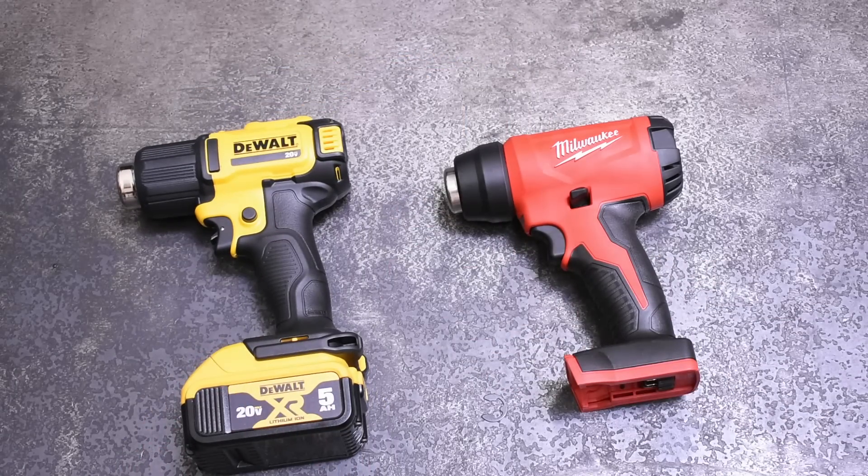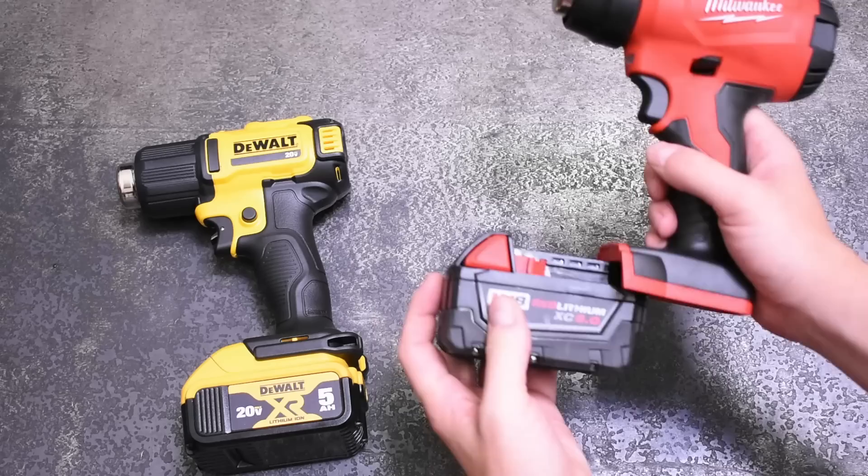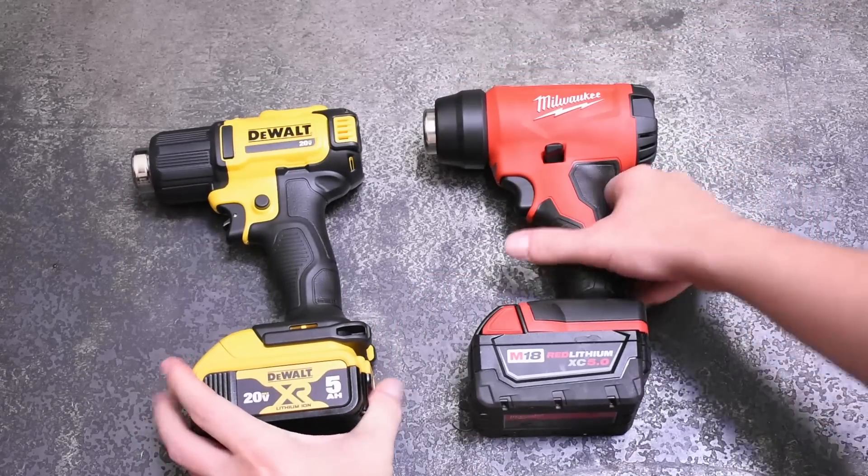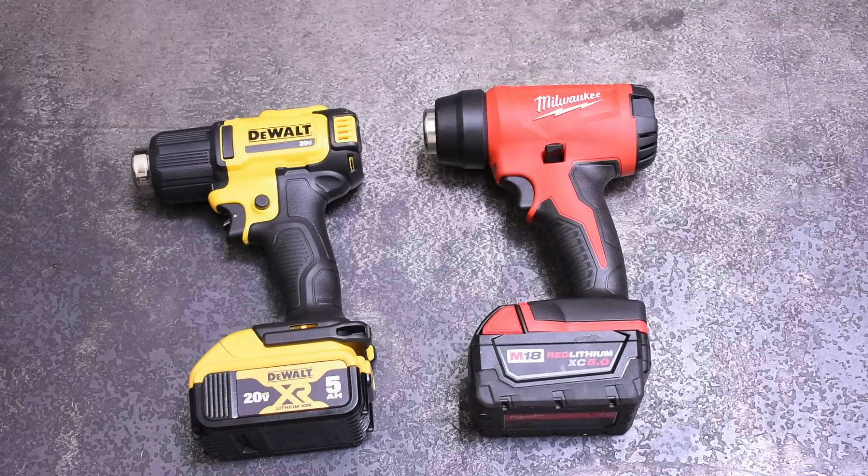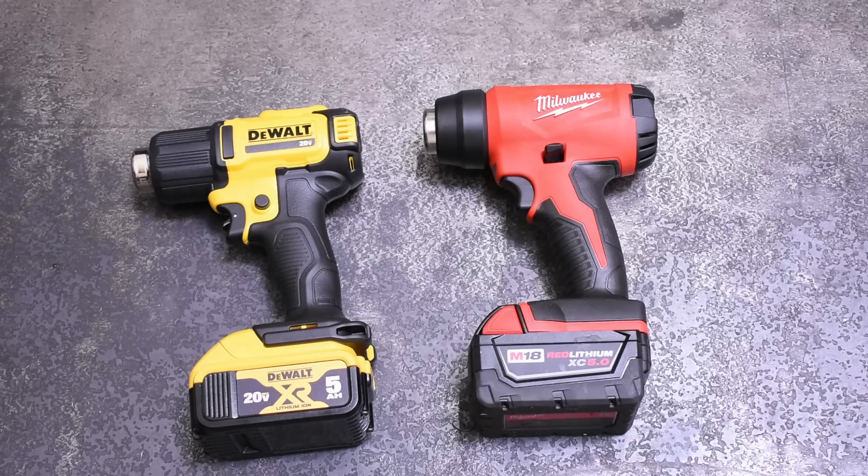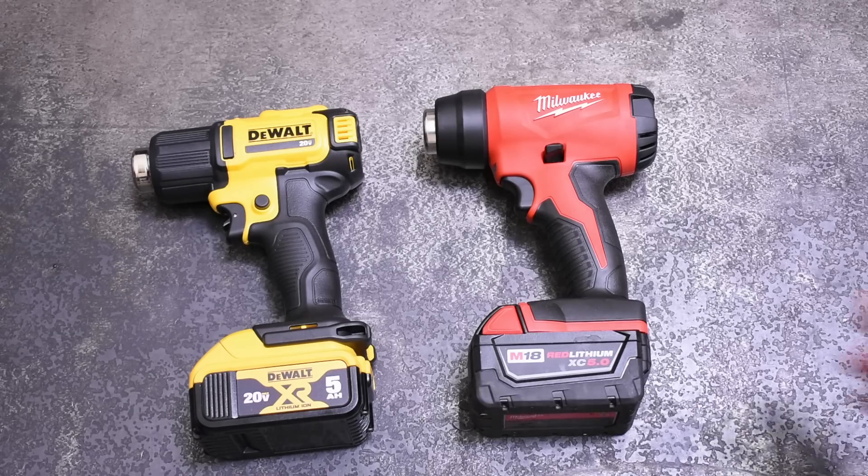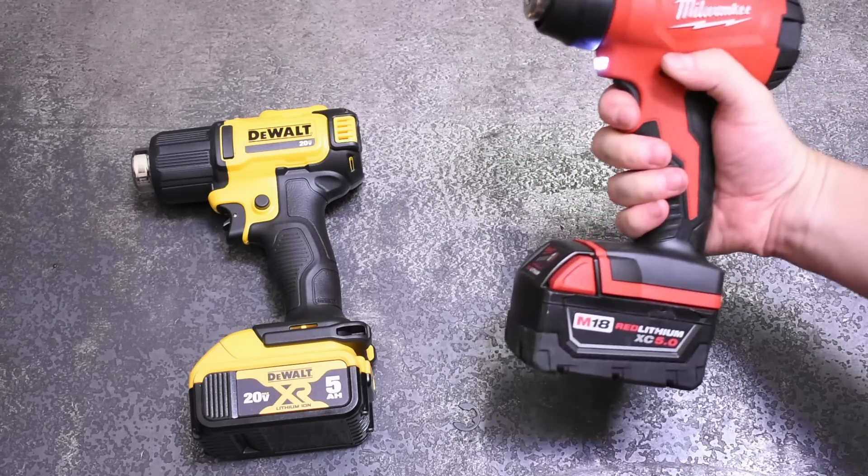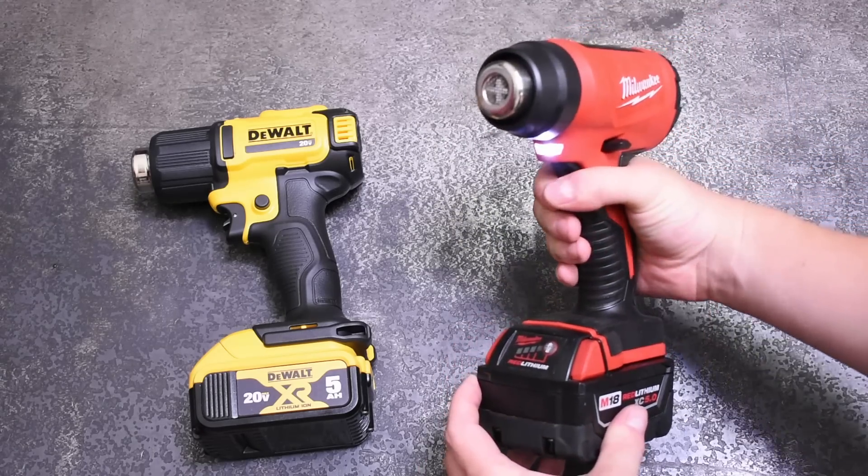Stay tuned to the end of this episode, where we pit the Dewalt heat gun versus the Milwaukee to see which one is a better buy there, and it's not very close. After draining them, then we'll allow them a couple of minutes to cool and test and retest to see how much power you're leaving on the table when you don't have a battery pack at its peak capacity.